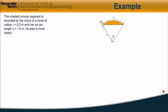The shaded circular segment shown is bounded by the chord of a circle of radius r equals 2 meters, and it has an arc length s of 1 meter. Its area is most nearly which of these four answers?